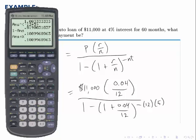Now moving to the numerator, we calculate 11,000 times .04 divided by 12, and then we need to divide that by the denominator. Again, I could type in the entire denominator, but since I have it stored as x, all I have to hit is divided by x. And that is the answer for the monthly payment. So the monthly payment is $202.58.